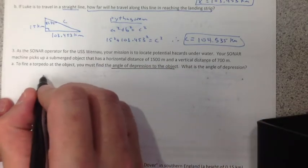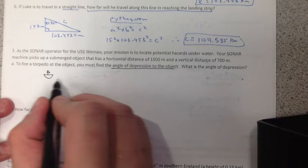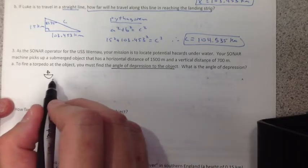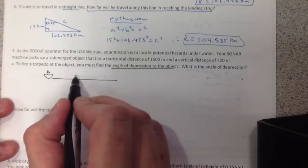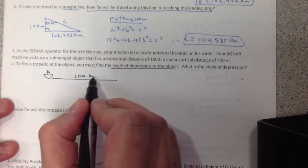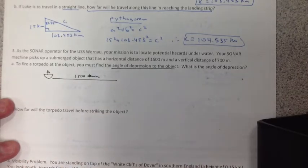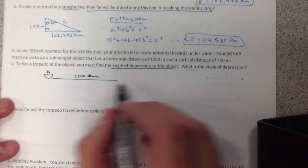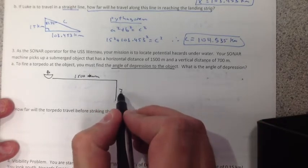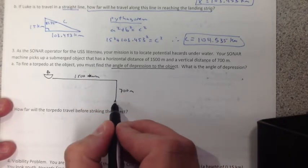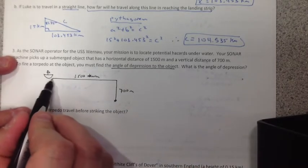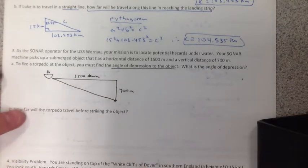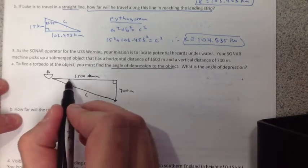So let's draw you. You're on the USS Foranau. The object has a horizontal distance of 1,500 meters away from you. That's your horizontal, 1,500 meters. And it is located down vertically 700 meters. And there is the object. Now to be safe, because you don't know what it is, you fire a torpedo at it. We have our right triangle, and there is our hypotenuse C. What we're looking for is the angle of depression.